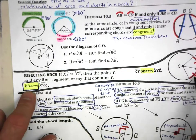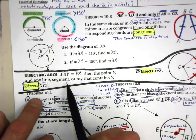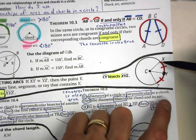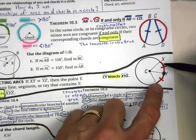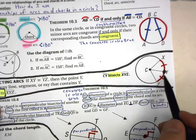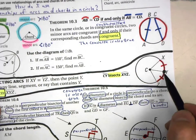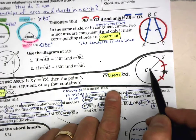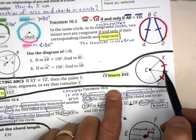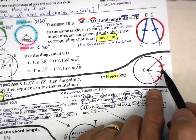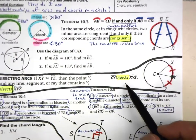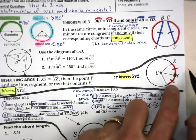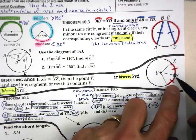Here's a separate theorem about bisecting arcs. If these two arcs are congruent to each other, then this point could be considered the midpoint of this arc. We say that segment CY is bisecting the arc. Just like we've used the term bisecting a segment or bisecting an angle, we can also use the concept of bisecting an arc.